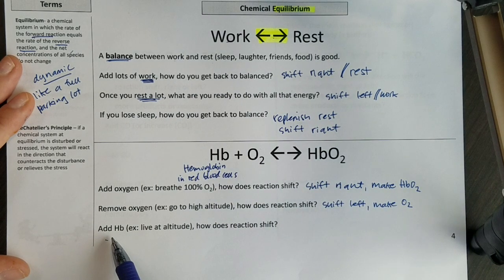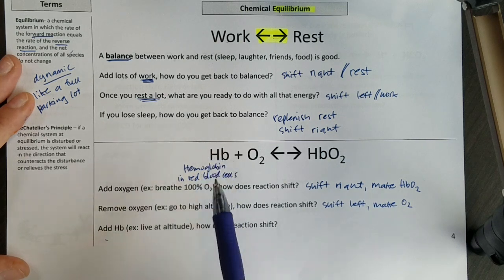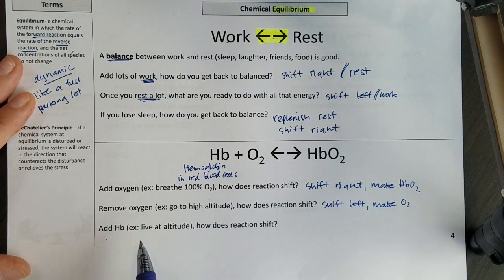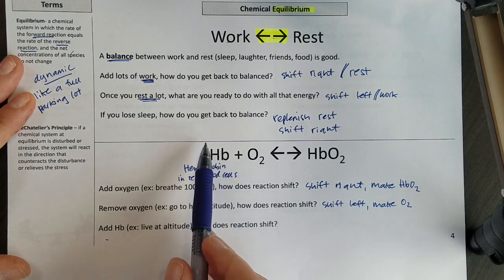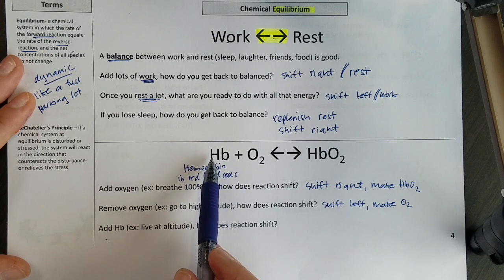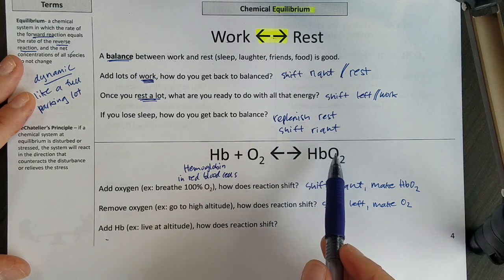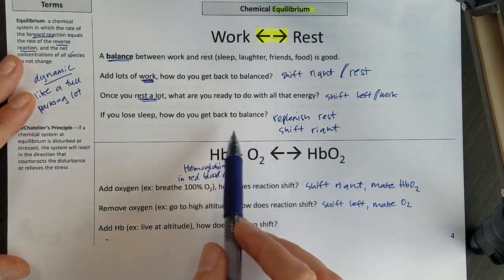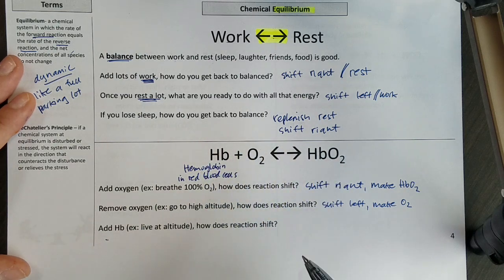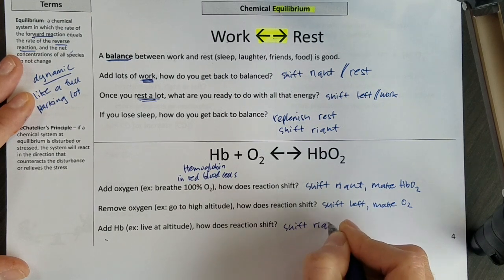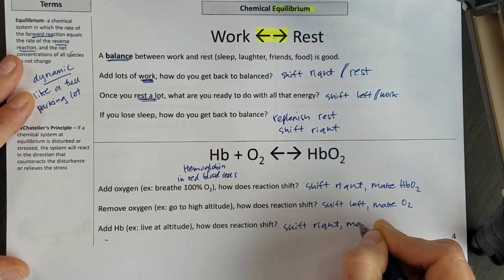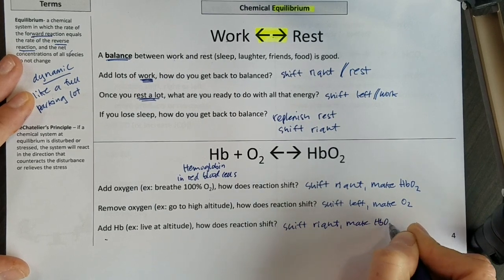Final thing to think about, what if I add hemoglobin? So if you live at high altitude, your body makes more red blood cells after a couple of weeks. If I add hemoglobin, now I have more of this, and that's going to force me to get back to balance. I need to take a lot of this and convert some of it into that hemoglobin oxygen. So I could say that I shift right and I make more hemoglobin oxygen.